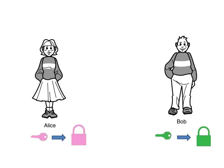From their keys, Alice and Bob make their matching locks, using PassLock. You can always make the lock matching a key, but it is impossible to make the key starting from the lock. This is very important, as we shall see later.